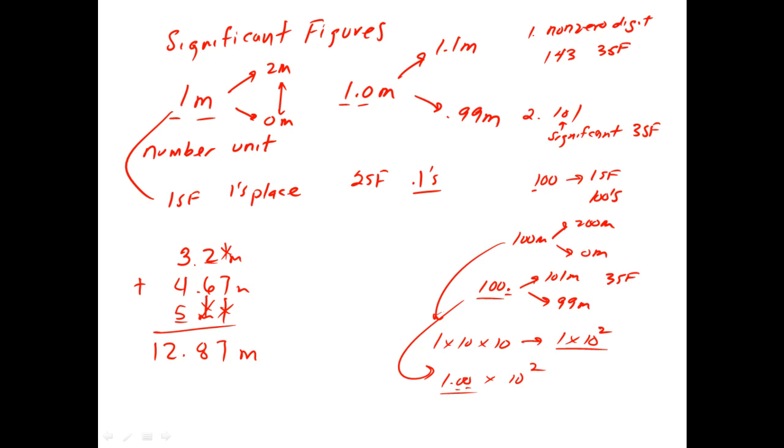So we cannot legally convey that we know this measurement to the tenths or the hundredths place, because there's unknowns up here. So the best we can do is report to where our least precise measurement was made. This is our least precise measurement at five meters.